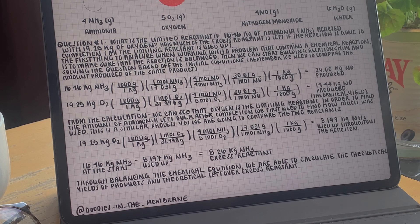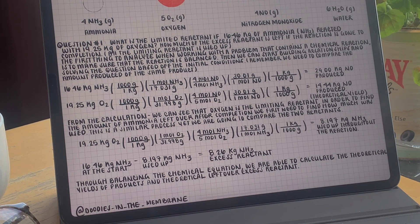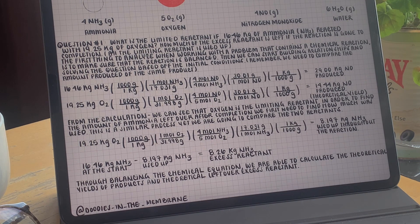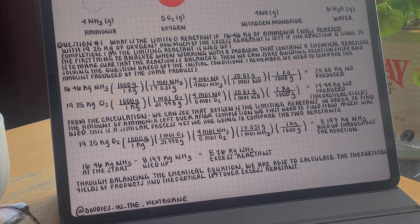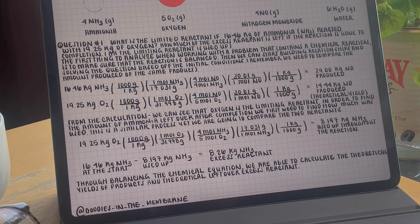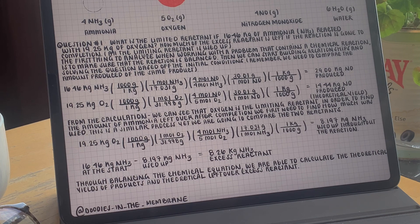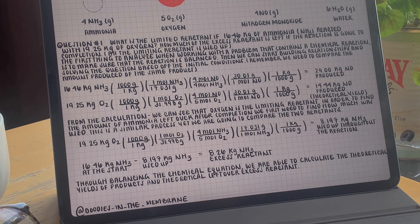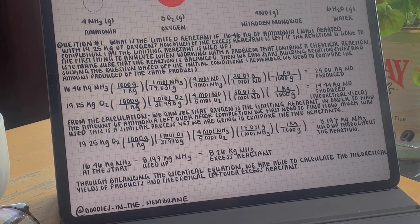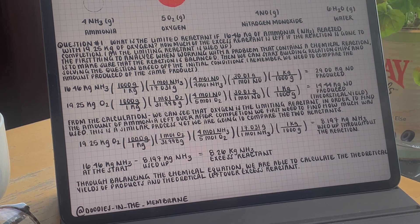Now that we know oxygen is the limiting reactant, we can use a very similar stoichiometric analysis to find the amount of ammonia that 19.25 kilograms of oxygen will react with. We will convert kilograms of oxygen to grams, grams to moles of oxygen, then multiply by the ratio of 4 moles of ammonia over 5 moles of oxygen from our balanced chemical equation, then convert to grams of ammonia and finally kilograms, for a total of 8.197 kilograms of ammonia used up in the reaction with 19.25 kilograms of oxygen. To find the excess reactant, we subtract: 16.46 kilograms of ammonia minus 8.187 kilograms used up, for a total of 8.26 kilograms of ammonia remaining after the reaction goes to completion.